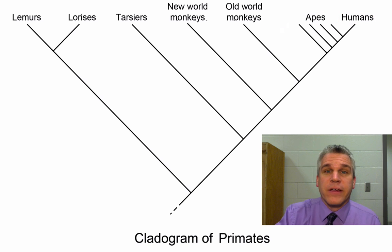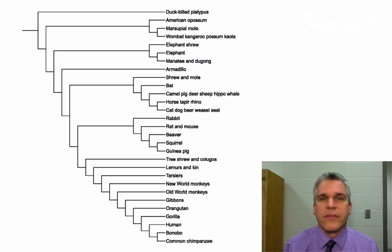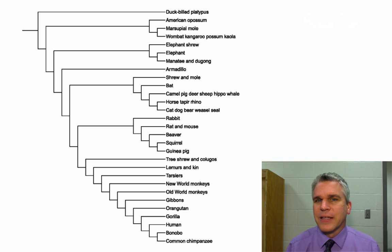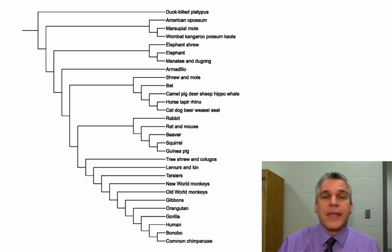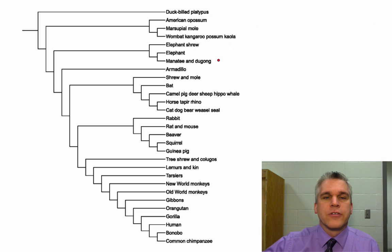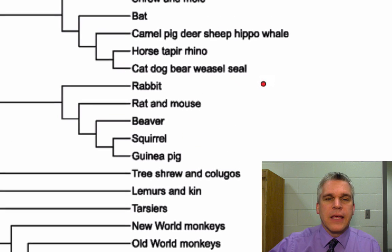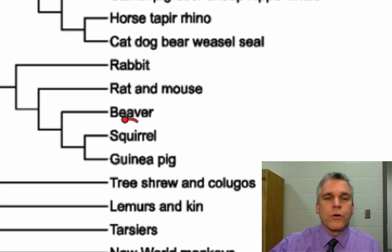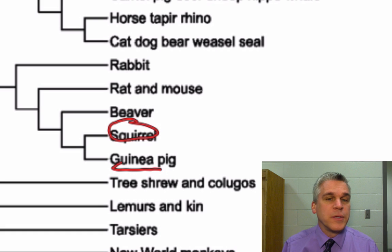Cladograms can get very complex, though. Here's another example of a cladogram — we're going to be seeing something like this in a lab that we'll be doing a little bit later on. But again, it can show us degrees of relatedness. For instance, if I were to take a look at the squirrel, I would see that the guinea pig is the most closely related species on this list.